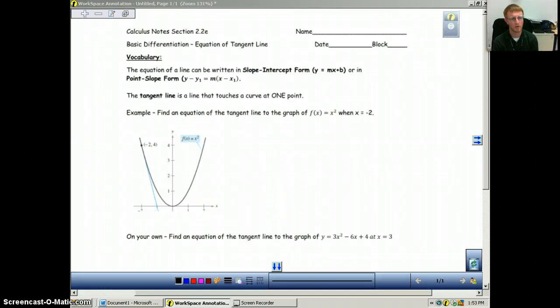This will be the last part of section 2.2. This is going to be talking about the equation of a tangent line. So this is some of the most confused things that we do when we're dealing with basic derivatives. It's because what happens is students start to think that the equation of the tangent line is the same as the derivative, and it's not.